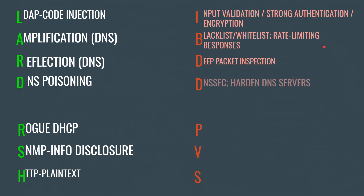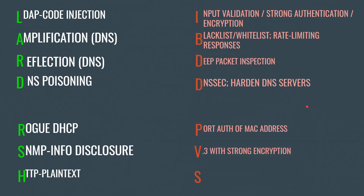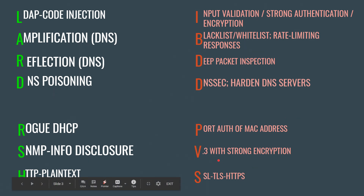For amplification, the countermeasures are blacklisting, whitelisting, and rate limiting responses. For reflection attack, we have deep packet inspection. For DNS poisoning, we have DNSSEC and hardening DNS servers. For rogue DHCP, we have port authentication of the MAC address. For SNMP information disclosure, we have version 3 with strong encryption. For HTTP in plain text, we have SSL/TLS and HTTPS.